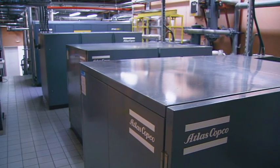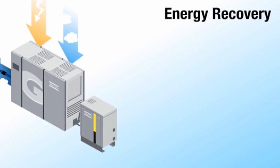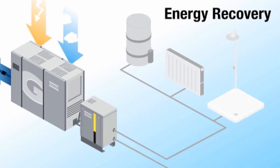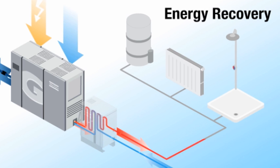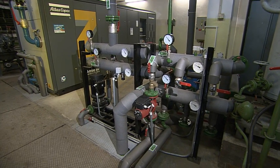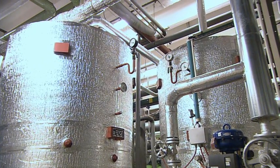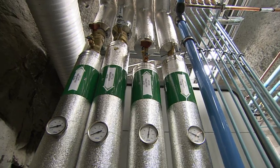Now that the compressed air system has been optimized, we can focus on benefits that the compressed air system can have on other processes. Energy recovery kits convert the waste heat generated by compression to useful heating applications, such as showers or central heating. Processed water or steam is an even better application, as it requires constant heat supply all year round. If your boiler room is close to your compressor room, this will probably be the best investment you will ever make.